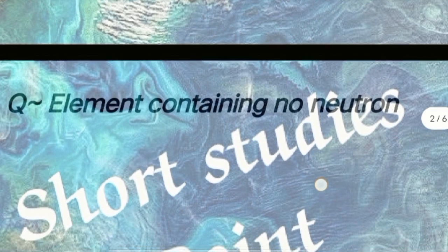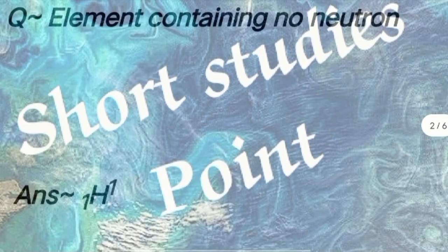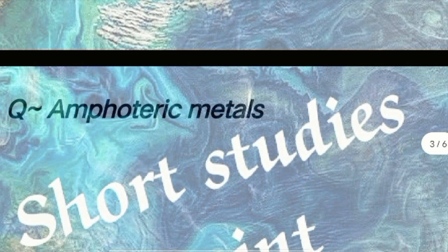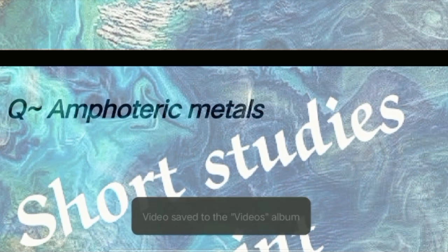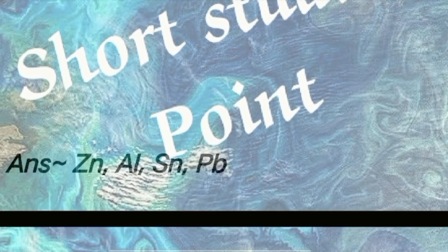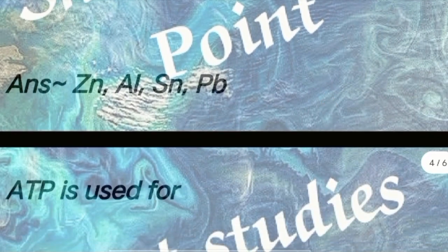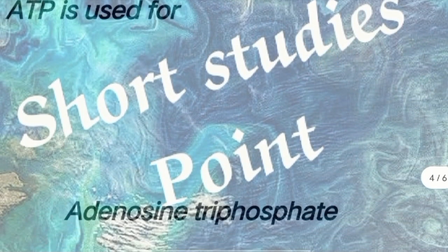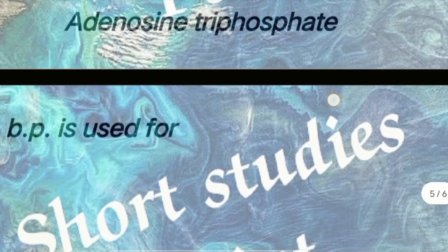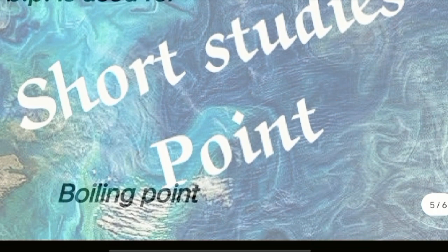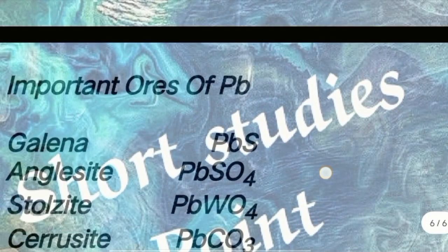Next question: Element containing no neutron. Answer: ¹H (Protium). Next question: Amphoteric metals. Answer: Zn, Al, Sn, Pb. Next question: ATP stands for. Answer: Adenosine Triphosphate. Next question: BP is used for. Answer: Boiling Point.